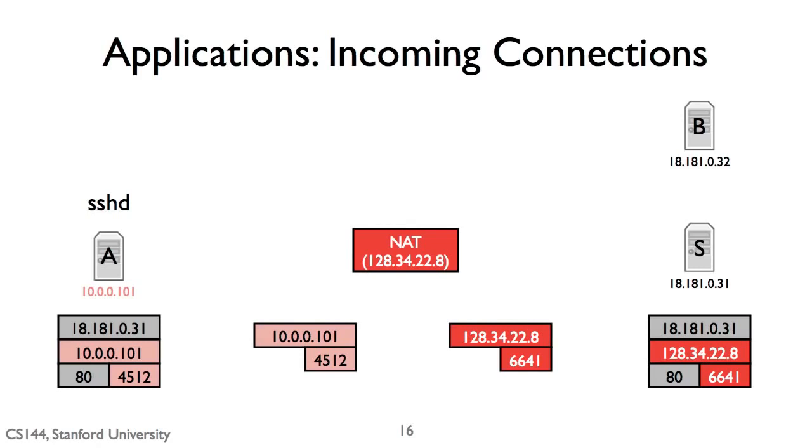So here we have an SSH server, or we have a server sitting behind a NAT. Here's server A. And it happens to be running an SSH server on port 22. And it has opened a connection to this server S. It's browsing the web. It does a web connection. This is great. So now what happens when host B wants to open an SSH connection to host A?